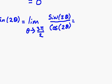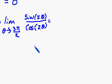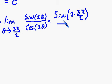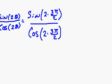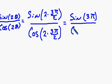Now I'm going to plug in 3π/2 directly into this. So we have sine of 2 times 3π/2, over cosine of 2 times 3π/2. Rewriting this, we end up with sine of 3π over cosine of 3π.